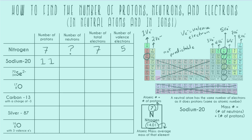The mass number is the number of neutrons plus the number of protons, because those two particles make up the huge majority of an atom's mass. So to find the number of neutrons, we subtract the mass number minus the atomic number. For this sodium atom, it has a mass number of 20, and we subtract the atomic number 11, giving us nine neutrons.